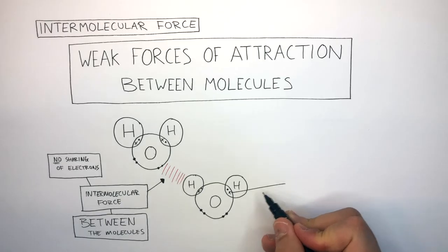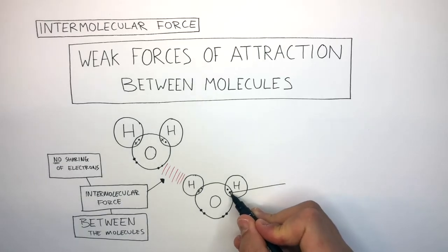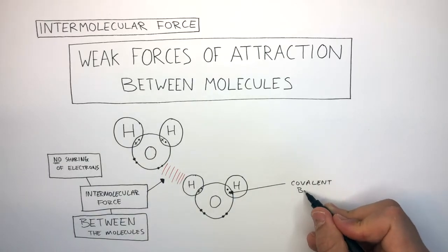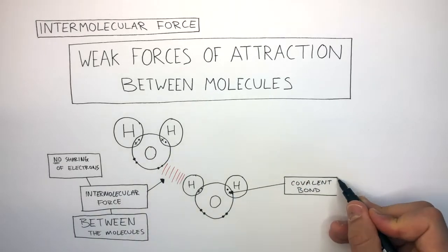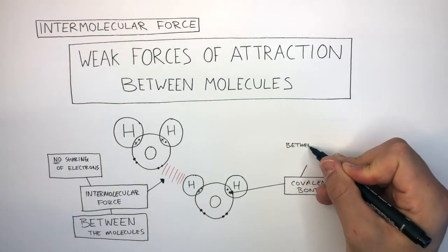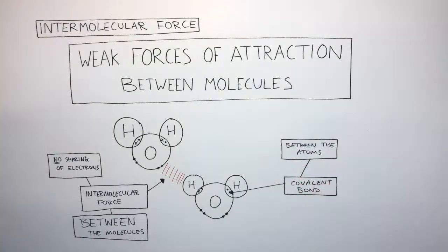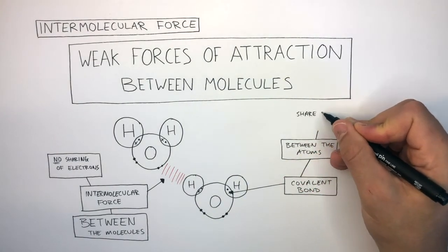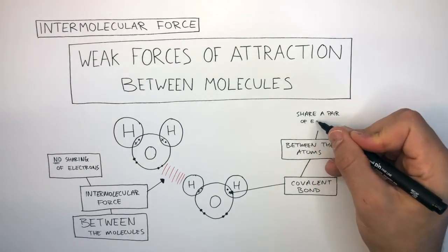Whereas, where these two outer shells overlap, this is a covalent bond. A covalent bond is between the atoms and they share a pair of electrons.